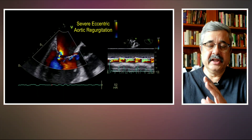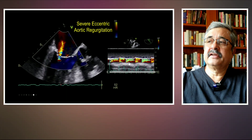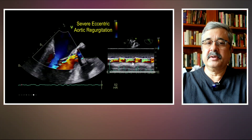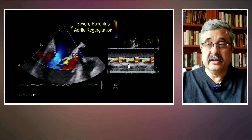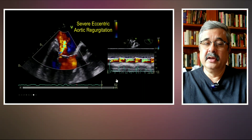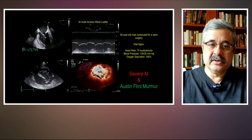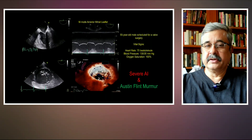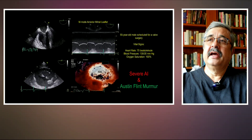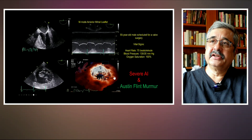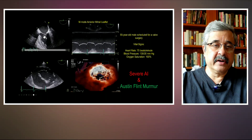It's actually more than that, but you don't see it as clearly because it's all eccentric — it is all hitting the anterior mitral leaflet and sparing the interventricular septum. So this is severe eccentric aortic regurgitation. There's also another peculiar feature: this is known as the Austin Flint murmur, which is a murmur of severe aortic insufficiency produced by the aortic regurgitation jet hitting the mitral leaflet, leading to high-frequency fluttering of the mitral leaflet.